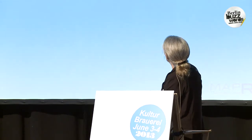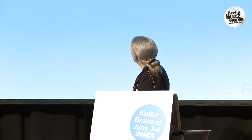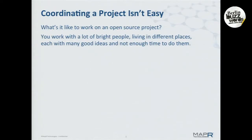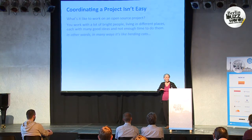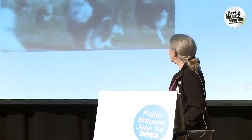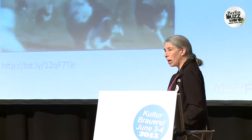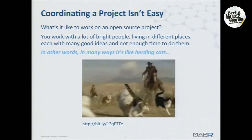What is it like to actually work on an open source project? You get involved with a lot of very bright people living in different places, each with a lot of good ideas, and generally they don't have enough time. In a lot of ways, it's like herding cats — a lot of people, different ideas, different places. How do you get them coordinated and doing the right thing?